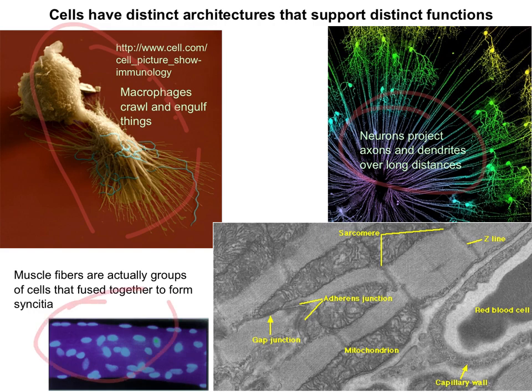Muscles like this — the little blue dots are the nuclei of multiple different cells. It looks like a single cell because a bunch of cells have fused together and maintained their nuclei. So a muscle cell isn't a cell at all — it's a syncytium of a whole bunch of different cells. And then they line up next to each other and make junctions with each other, and that's how muscles work: they have to pull on something in order to make mechanical work happen. So all these cells are very different in shape and function.